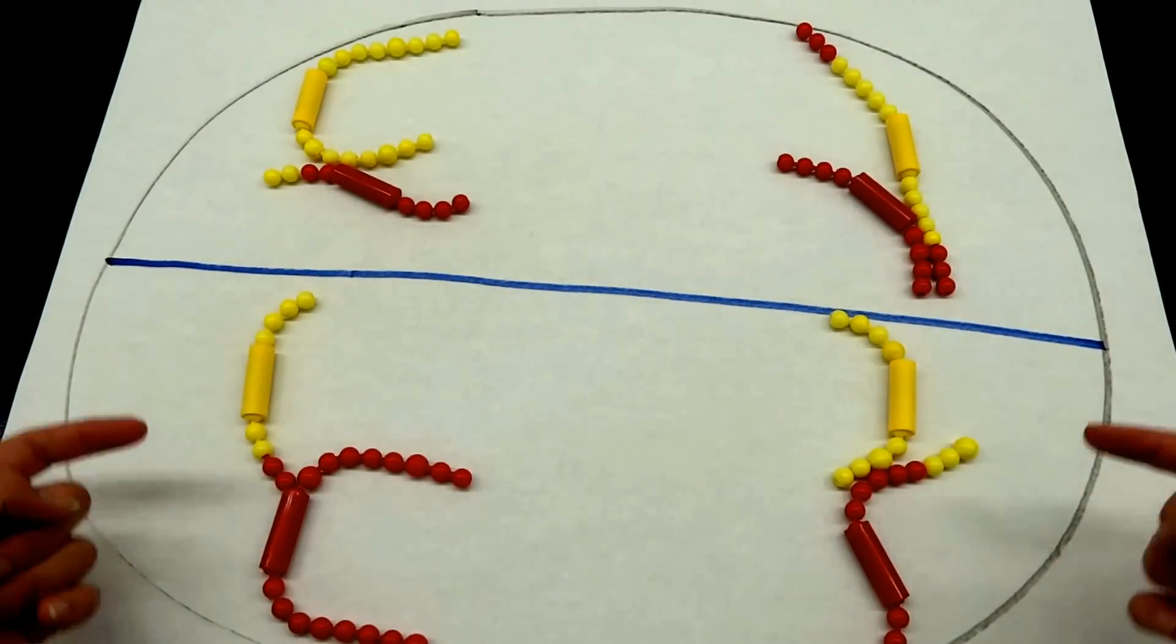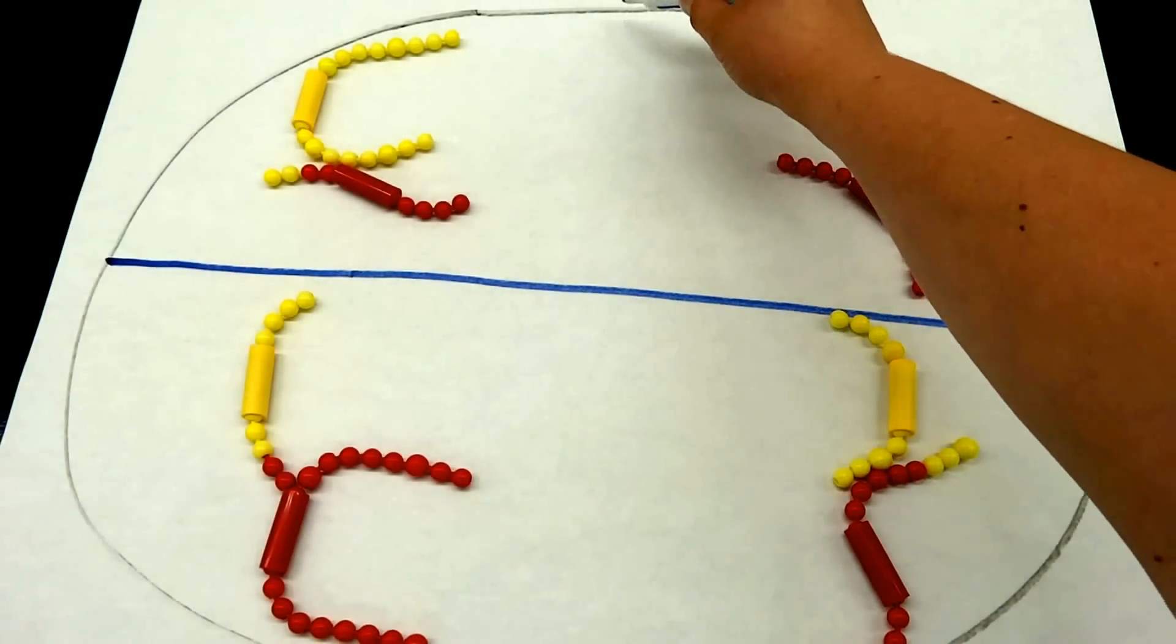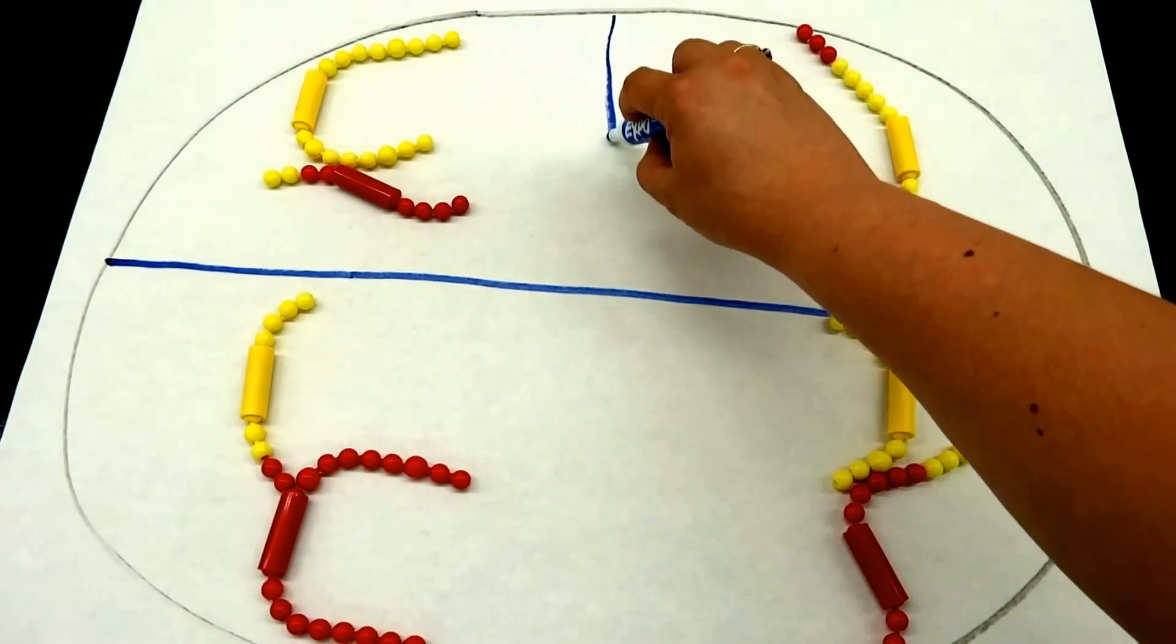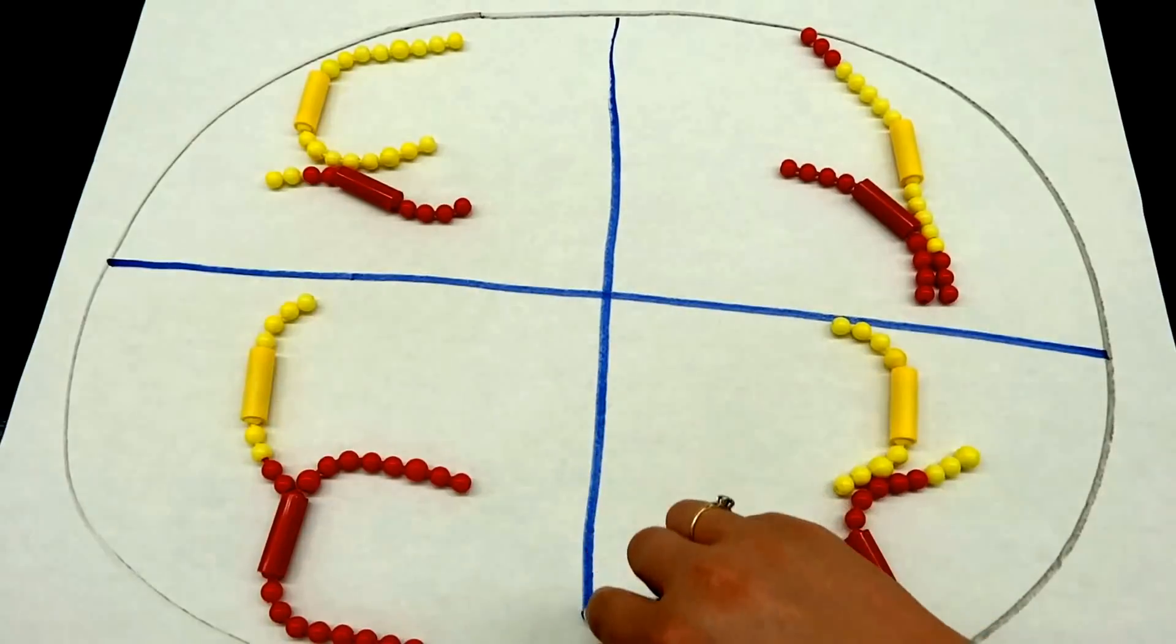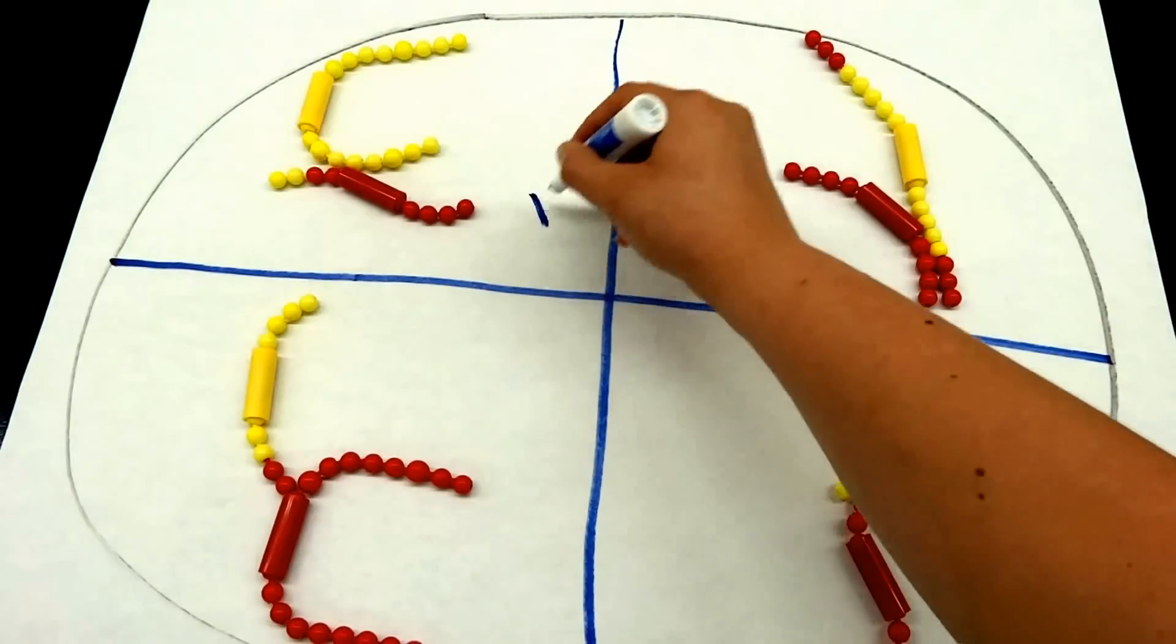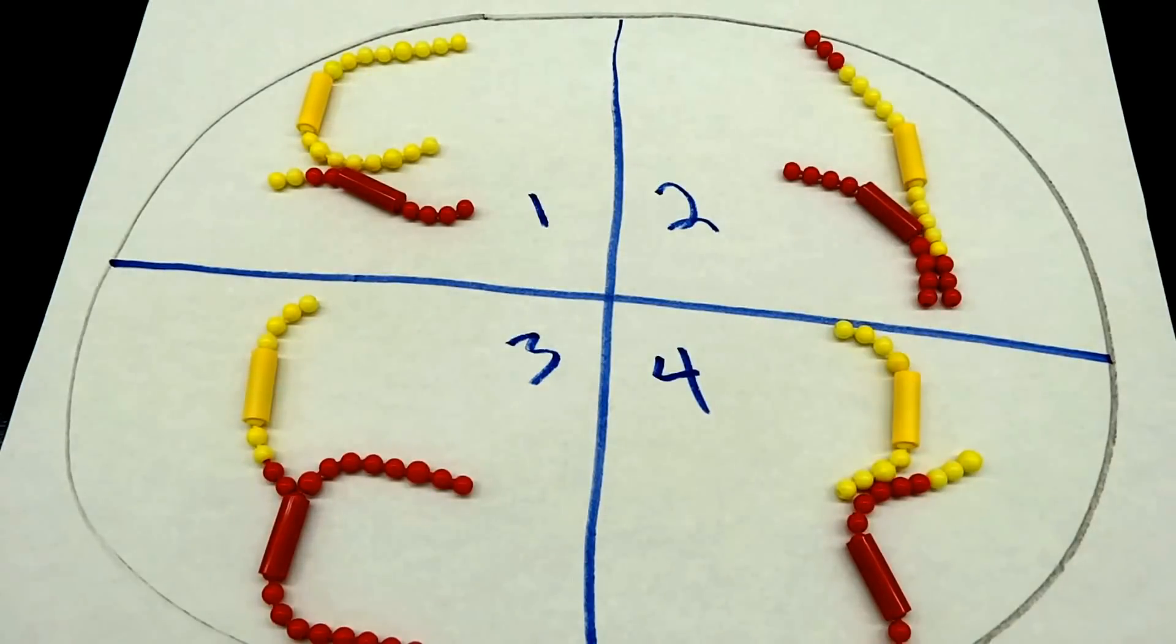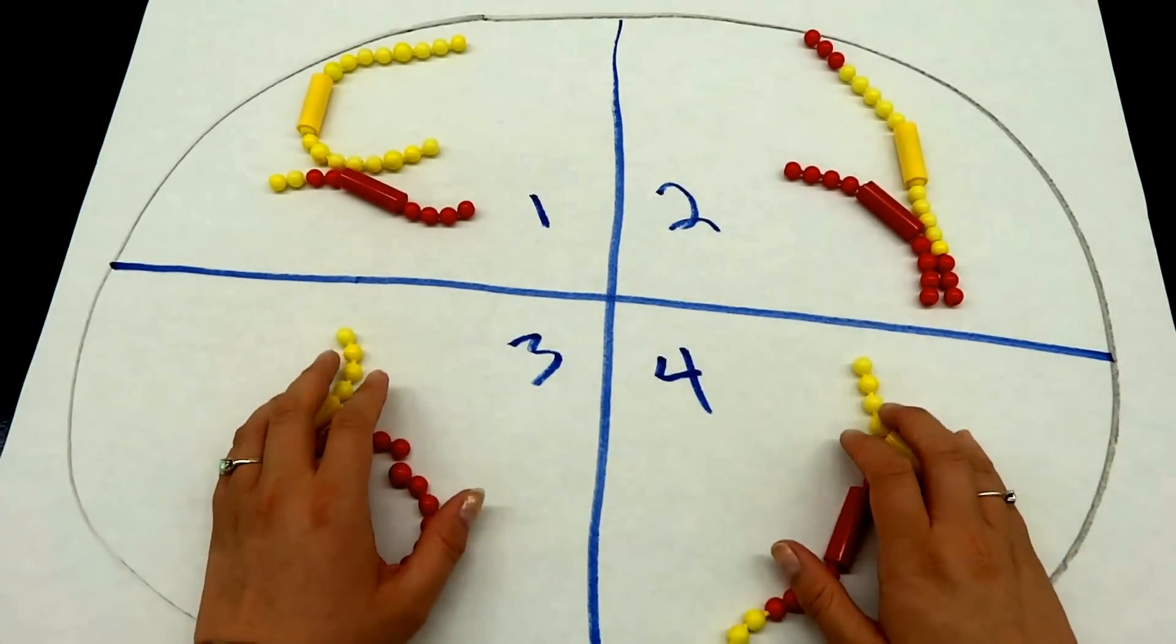As we move into telophase, we're going to begin the reformation of our nucleus and end it with cytokinesis, so that we have one, two, three, four separate cells. We're also going to see a nucleus form around each one of these.